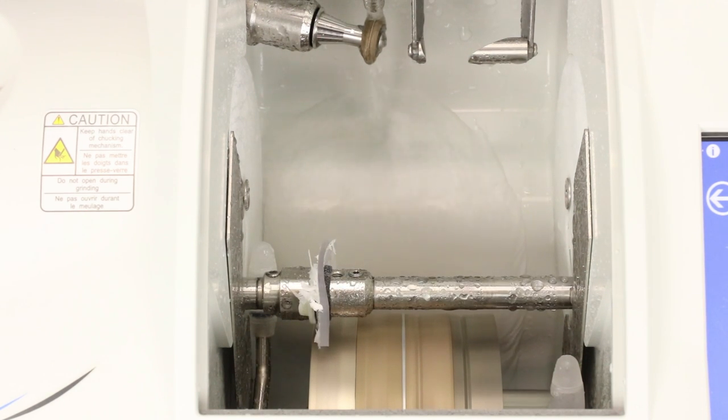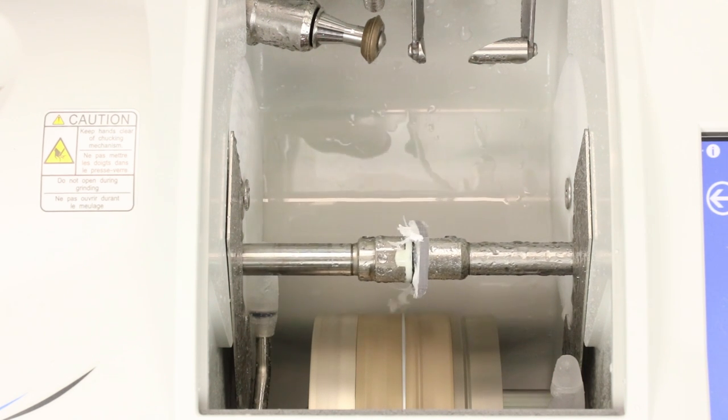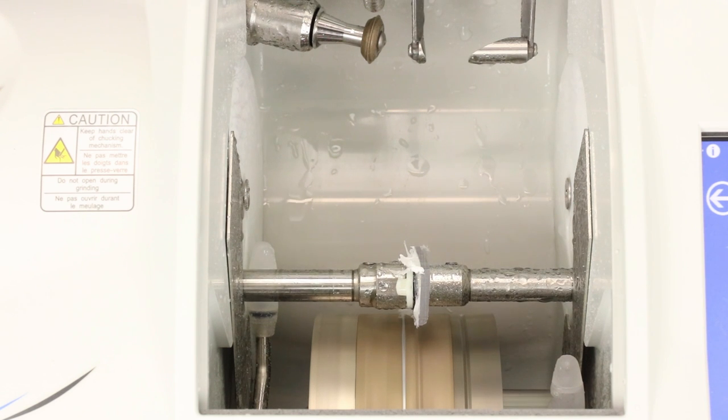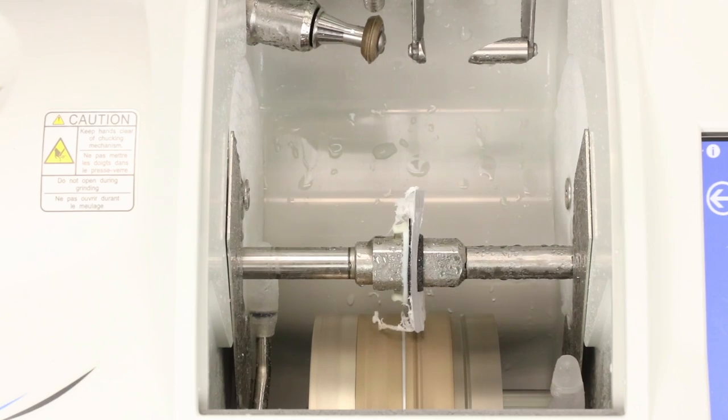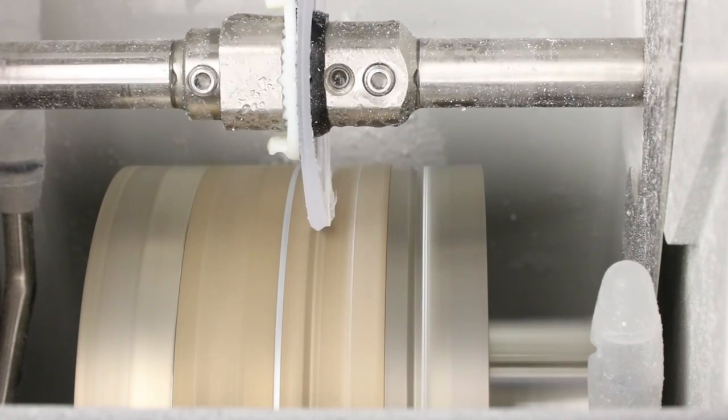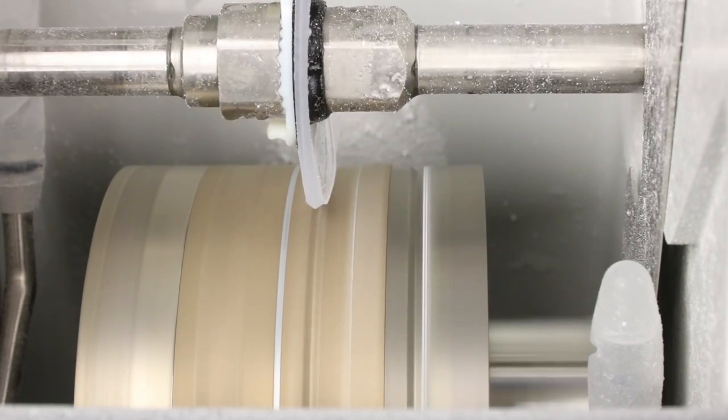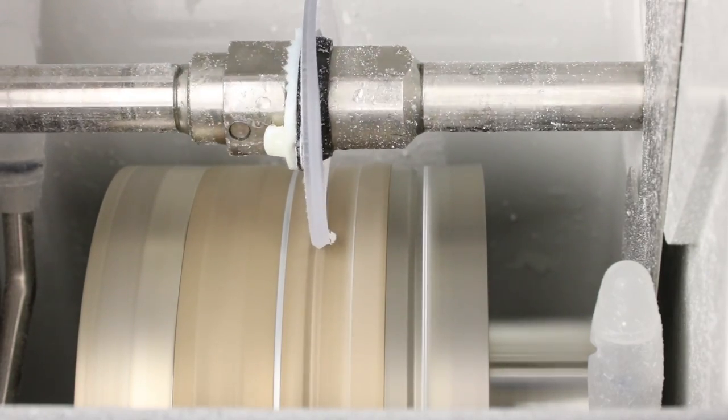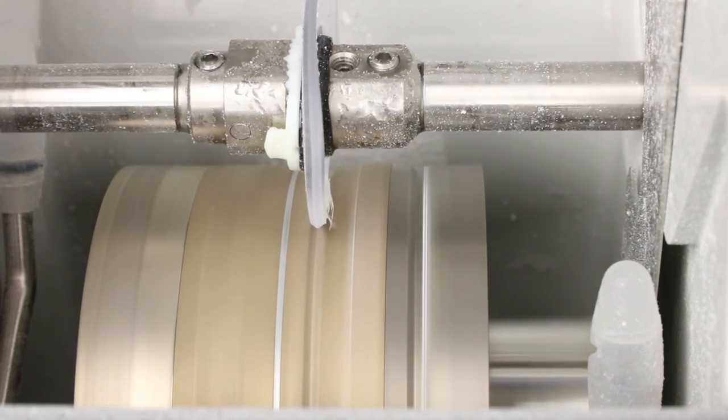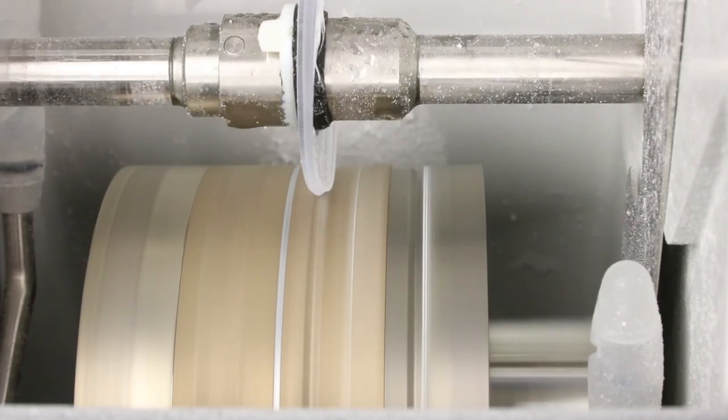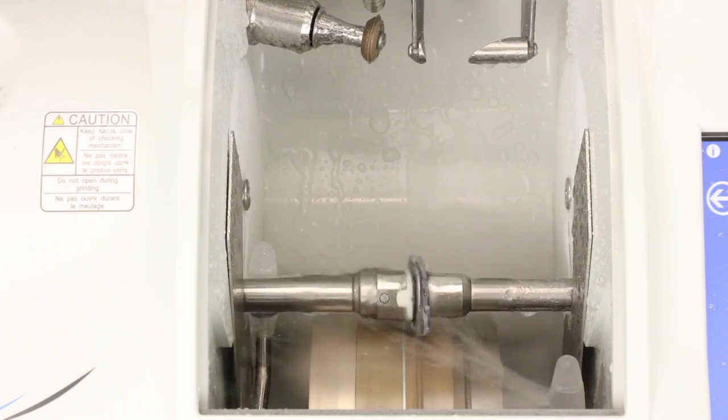Once the lens is roughed into shape, it's going to shift position and move over to the bevel wheel. Here, the edge of the lens is either going to get the familiar notch or bevel shape or a flat edge for future grooving or a flat edge for a drill mount. The silver wheel to the right is for applying a high-luster edge polish. And this lens is just about done.